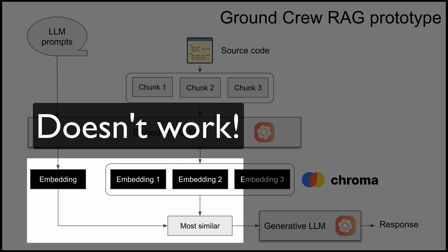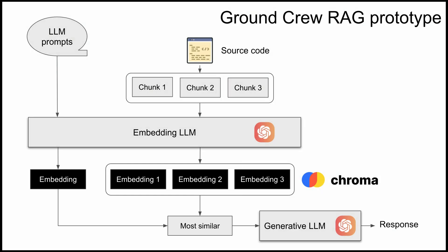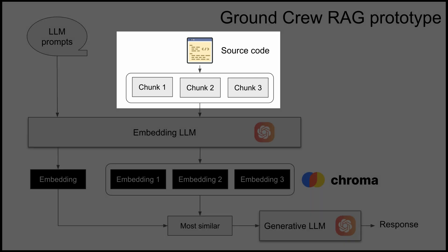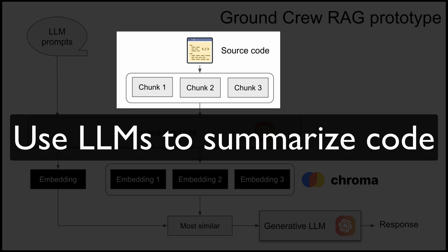Step three, qualitatively evaluate the results. Well, this step was easy — it didn't work. We quickly realized this approach wouldn't work. Embeddings based on code don't match well to embeddings from natural language. We discussed a few options and decided to use LLMs to summarize the code and create an embedding of the summary. If you're interested in these details, be sure to watch our YouTube live discussion with the engineers — the link is in the show notes.